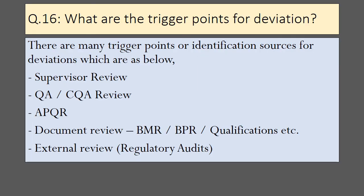What are the trigger points for deviations? There are many trigger points or identification sources, including supervisor review, QA or CQA review, APQR preparation, document review such as batch manufacturing record, batch packaging record, qualification records, or external review like regulatory audits.